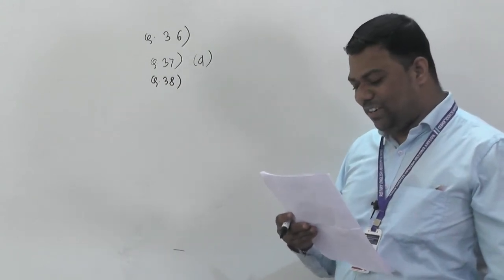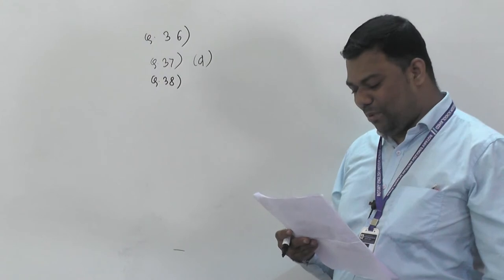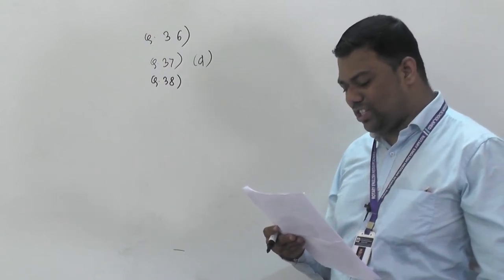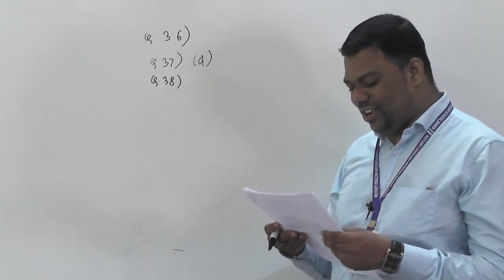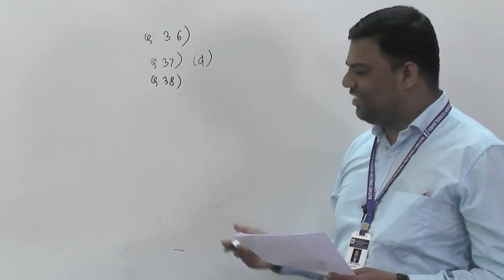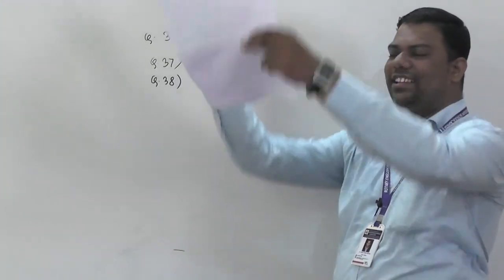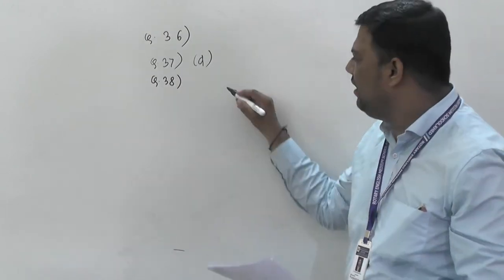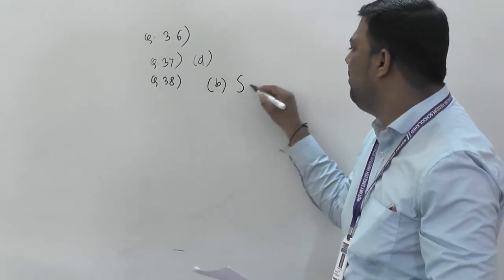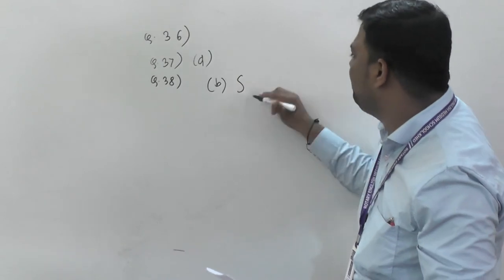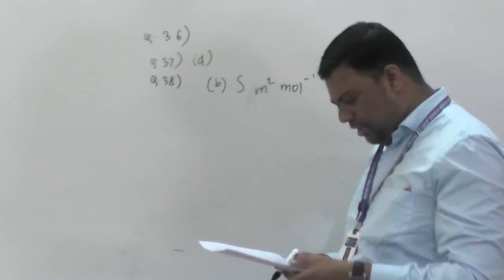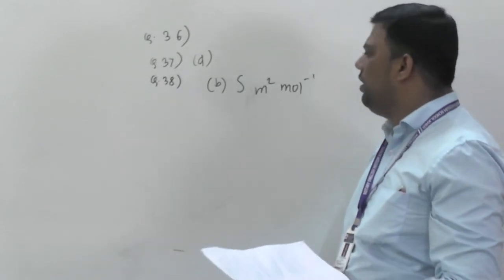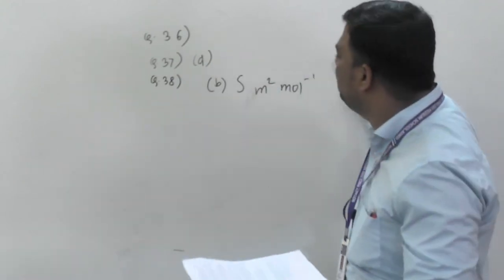Question number 38: conductivity in siemens is directly proportional to the area of the vessel and the concentration of the solution, and inversely proportional to the length of the vessel. The unit of the proportionality constant is siemens meter² mol⁻¹.